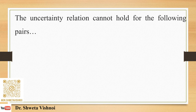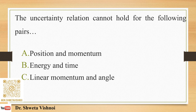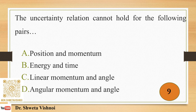The uncertainty relation cannot hold for which pair? (A) Position and momentum, (B) Energy and time, (C) Linear momentum and angle, (D) Angular momentum and angle. This is a theory question. Position-momentum and energy-time both follow uncertainty relations. Angular momentum and angle also have a relation, but linear momentum and angle have no such relation. Correct answer: C — linear momentum and angle.